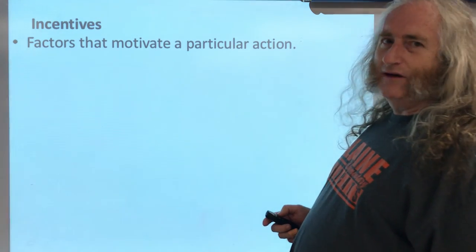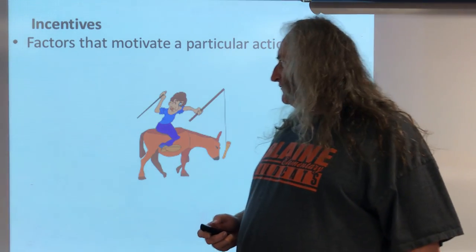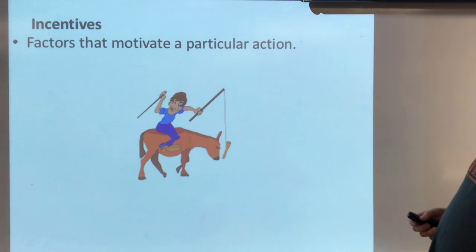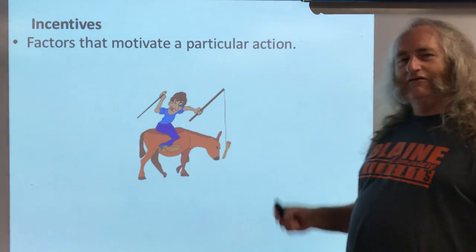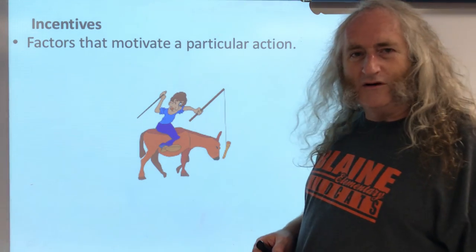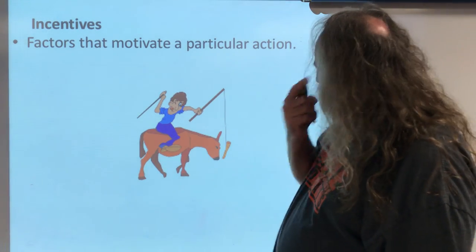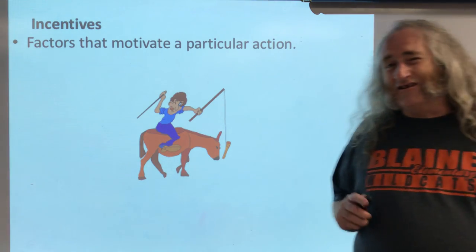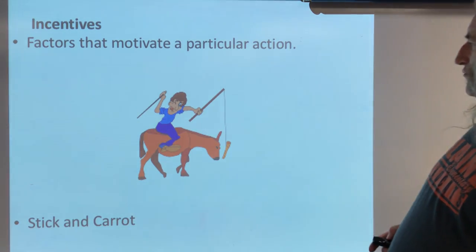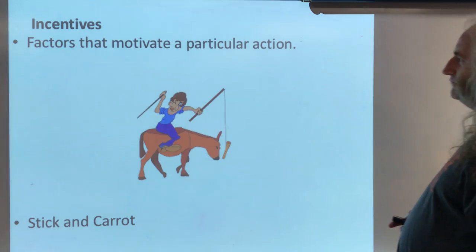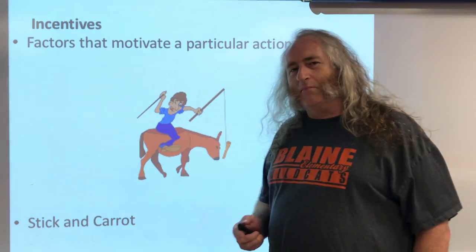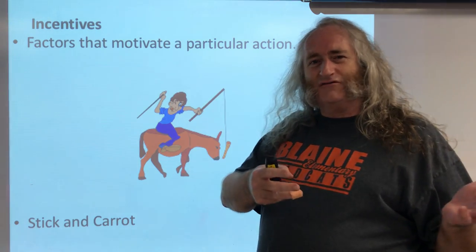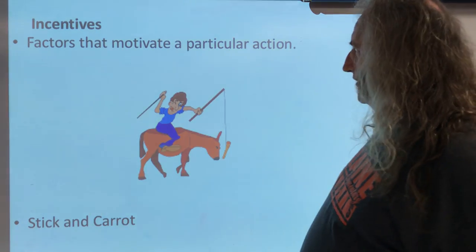A lot of times whenever people discuss incentives they'll talk about this situation. We see this poor little donkey, and dangling in front of the donkey is a carrot, which is something the donkey probably wants. But also the rider has a stick to hit the donkey with, which is probably something the donkey does not want. When we look at the stick and carrot method, we try to determine which one works best — what motivates one person may not motivate another.